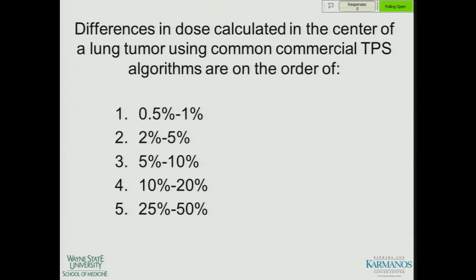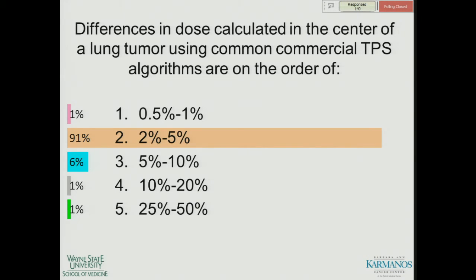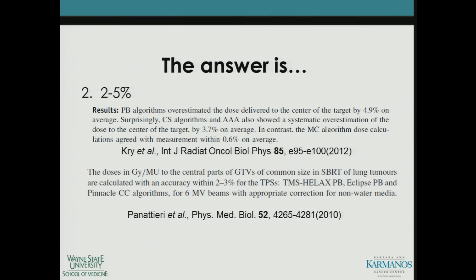That brings us to our last SAM question: differences in dose calculated at the center of a lung tumor — not the periphery — using common commercial TPS algorithms are on the order of half to 1%; 2 to 5%; 5 to 10%; 10 to 20%; or 25 to 50%? The answer is number 2 — 2 to 5%. The results from that RPC study as well as another publication in the Red Journal elucidate this concept.